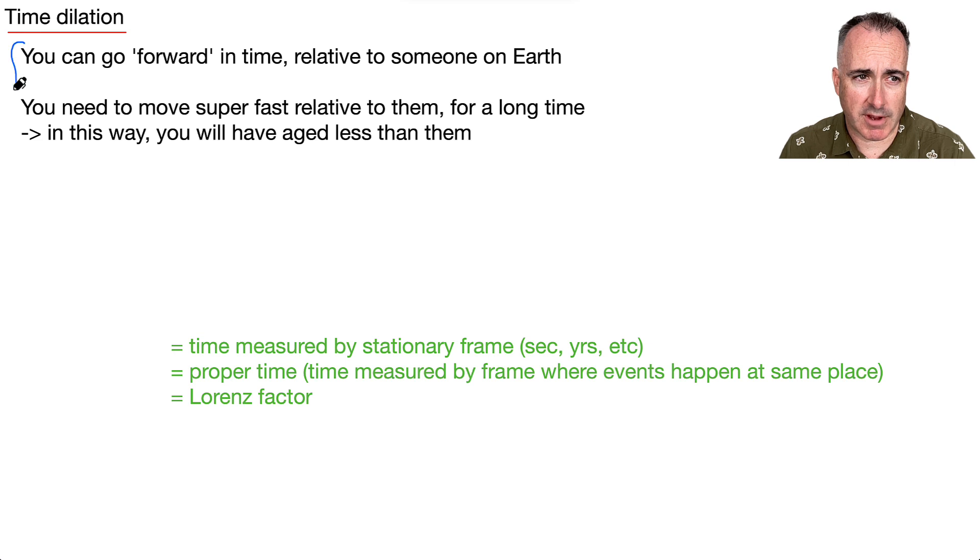Well, you need to move super fast. And when I say super fast, I mean like some sort of speed that's comparable to the speed of light. Maybe it's some fraction of the speed of light or something. And you have to go for a long time. And in this way, your own time that you measure will be different than the time of the people who didn't move. And in that sense, you've gone forward in time relative to them.